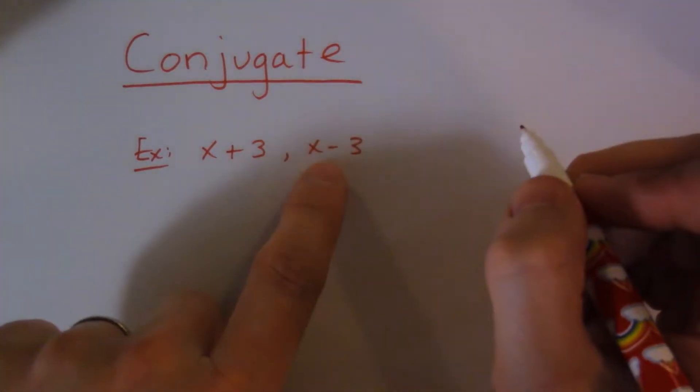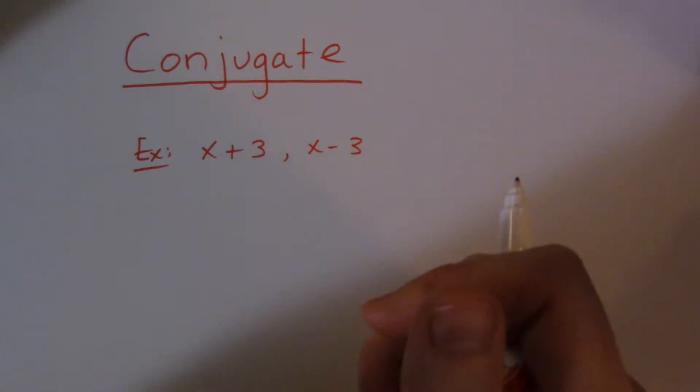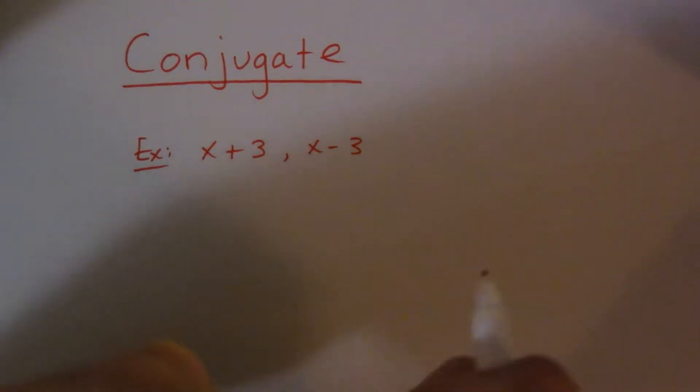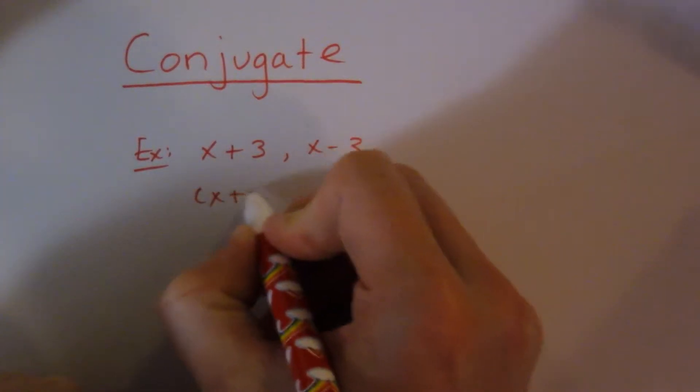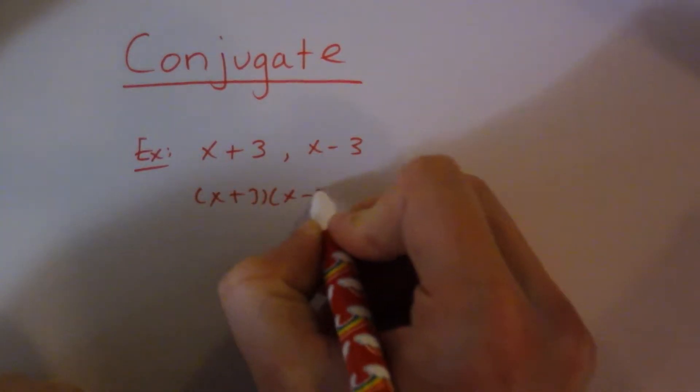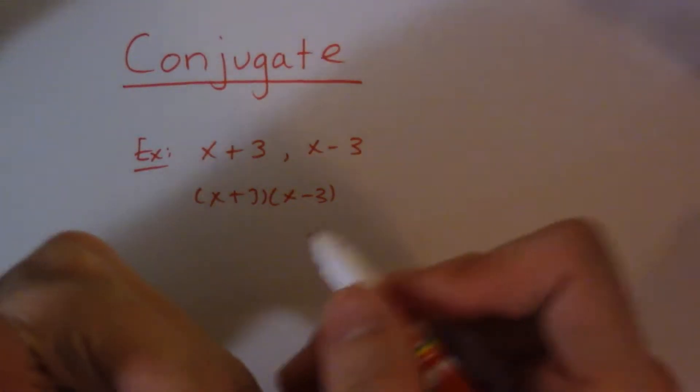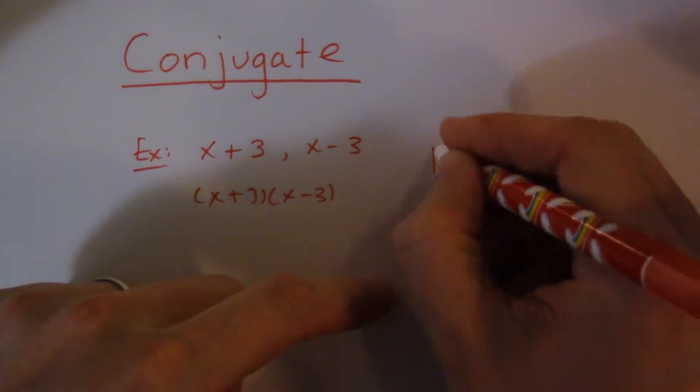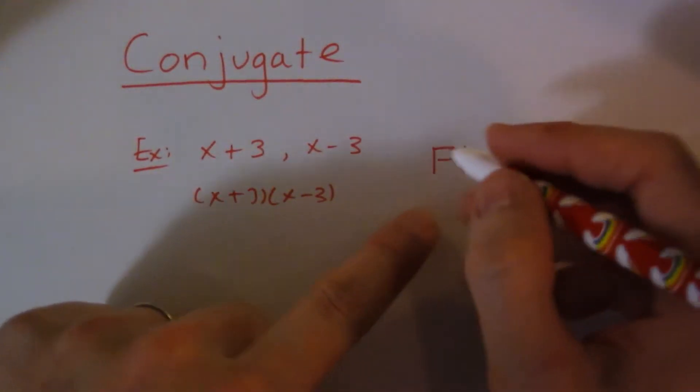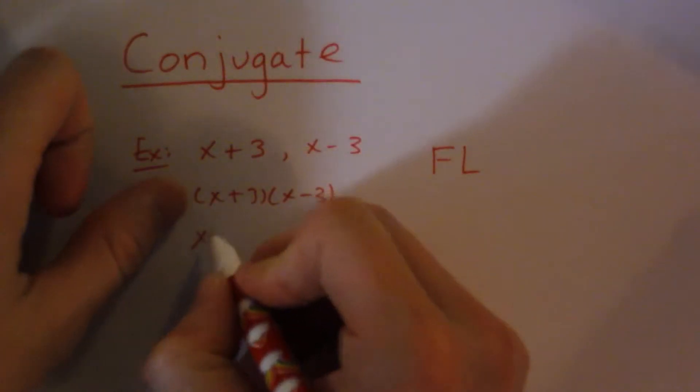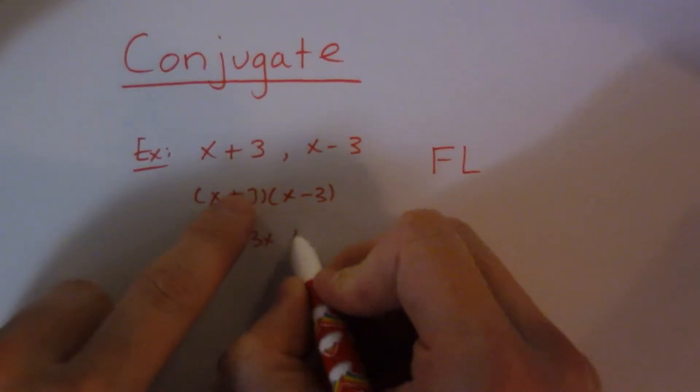And the reason why this thing is so beautiful is because when you multiply them together, you don't actually have to do—if I said multiply these two together, you'd probably think, well, I have to use FOIL. Well, the thing about when you multiply conjugates, you only have to use FLUH, which is first and last. So the reason why is because if I do these things, x squared and then 3x, negative 3x plus 3x and then minus 9.